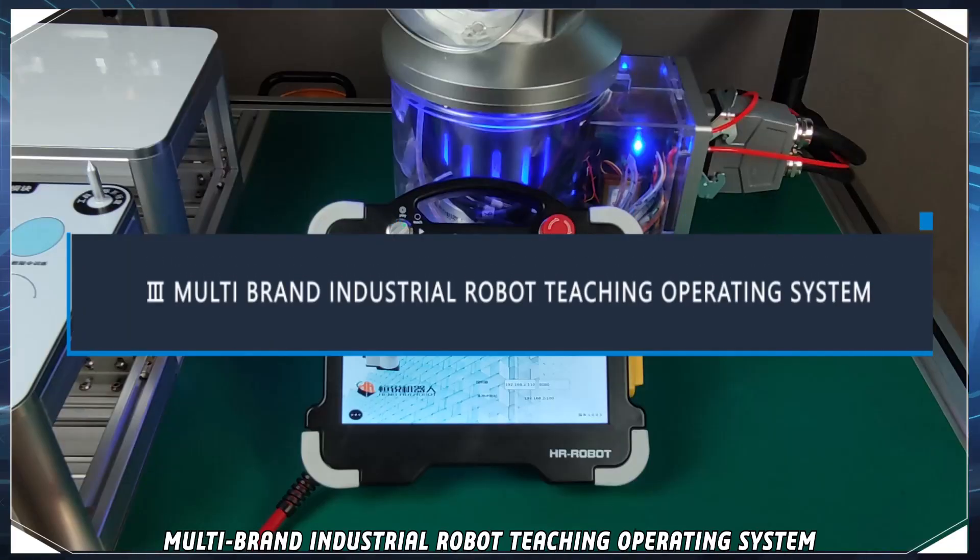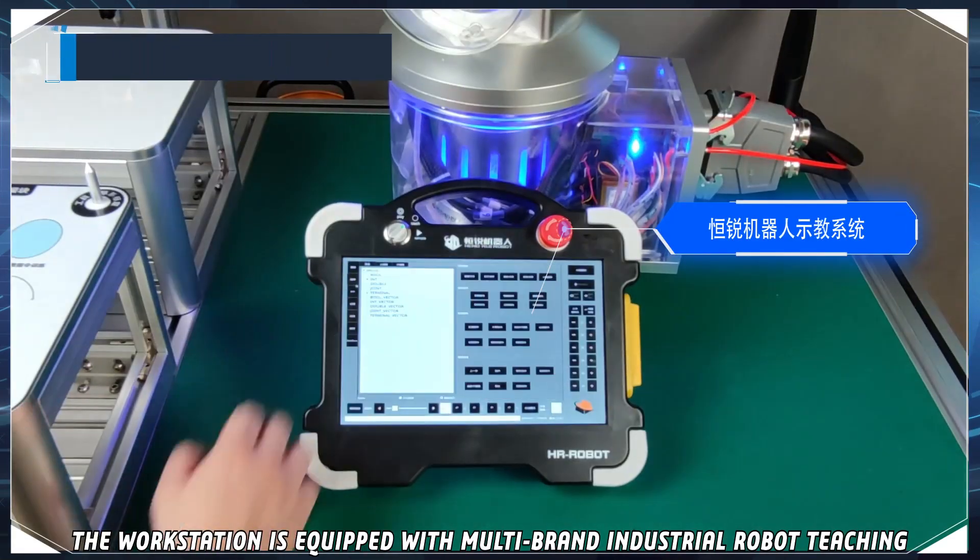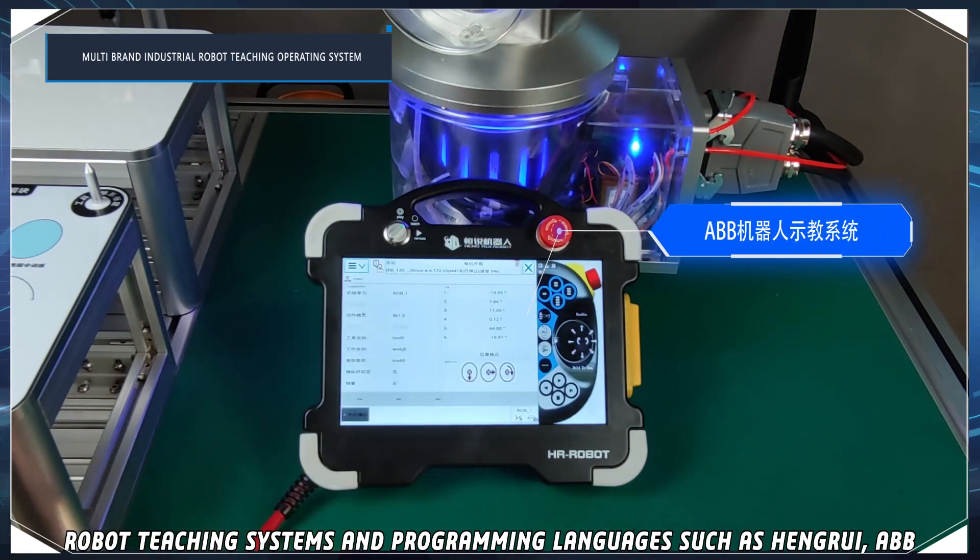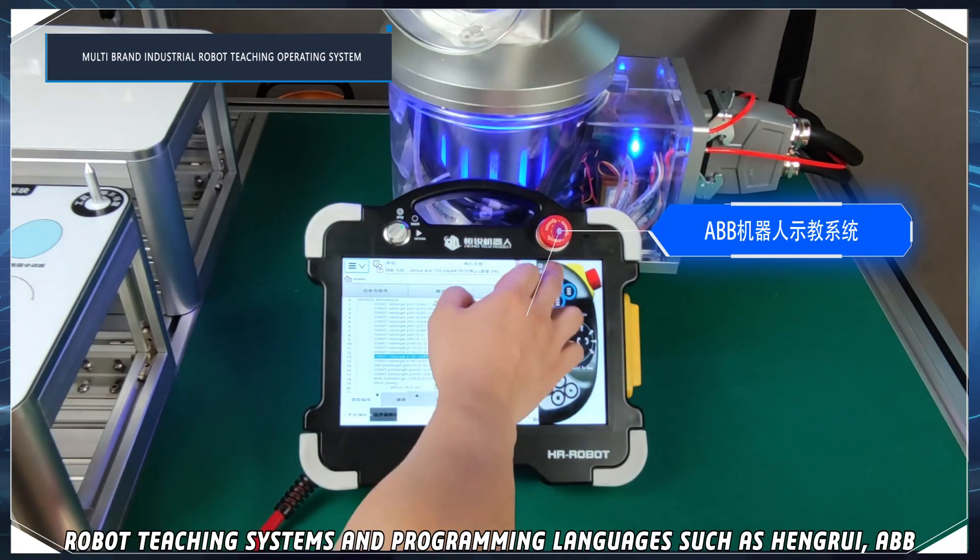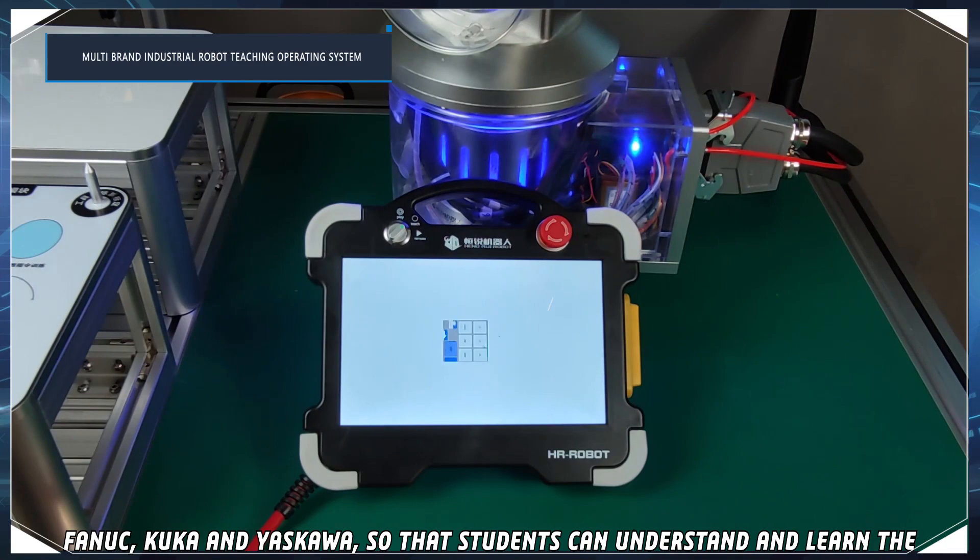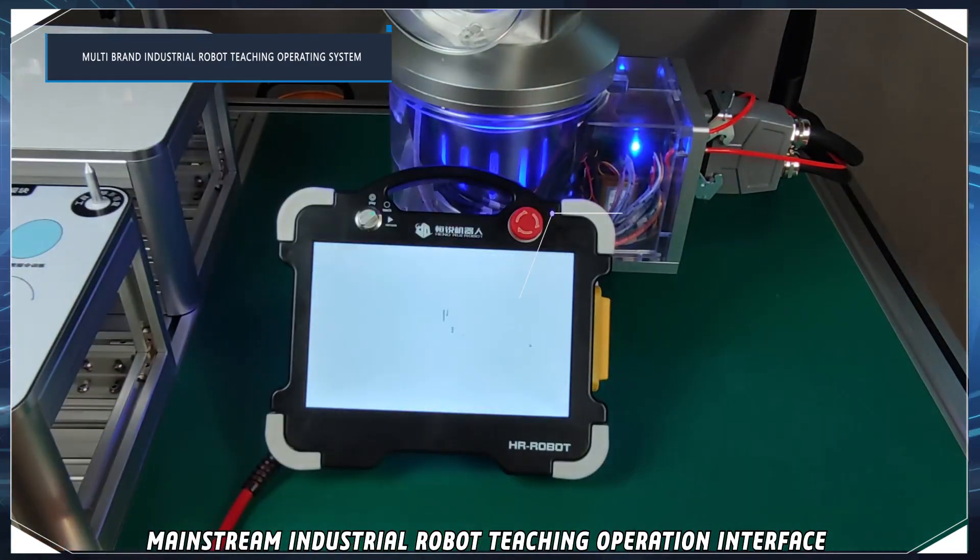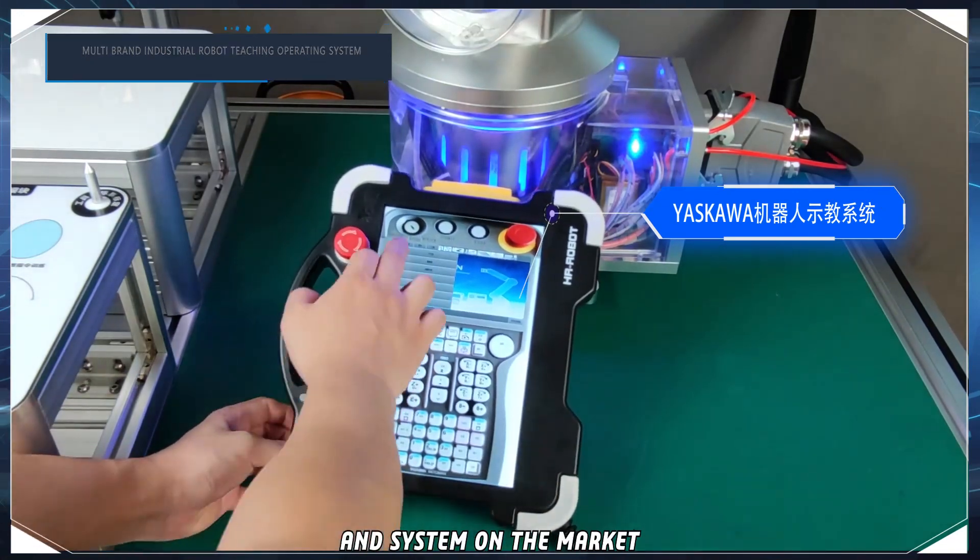Multi-brand industrial robot teaching operating system. The workstation is equipped with multi-brand industrial robot teaching operating system, which can simultaneously support a variety of industrial robot teaching systems and programming languages, such as Henry, ABB, FANUC, KUKA, and Yaskawa, so that students can understand and learn the mainstream industrial robot teaching operation interface and system on the market.